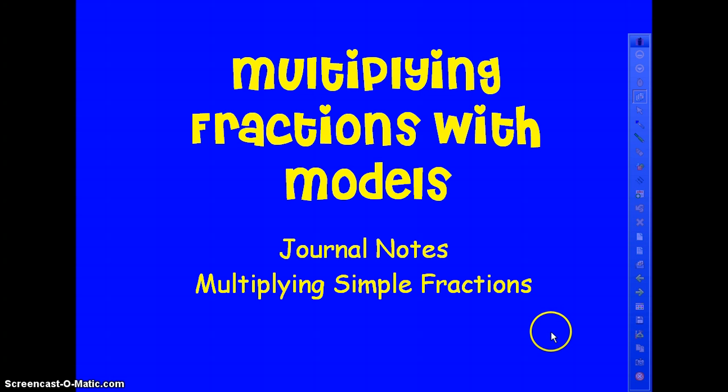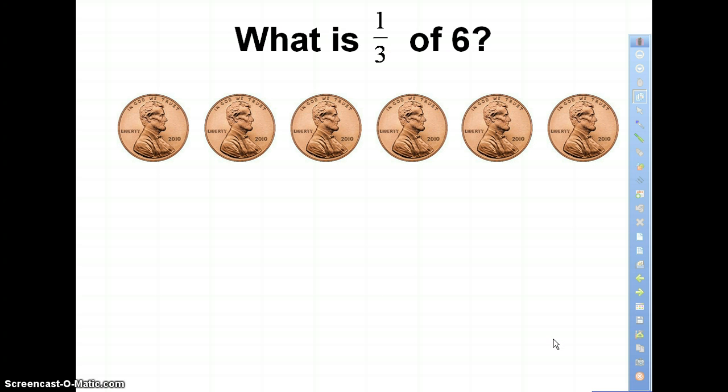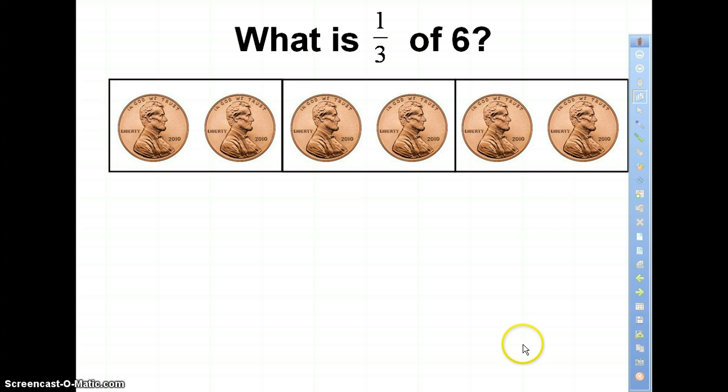All right, so let's get started. First problem number one: I want to know what is one-third of six. I've got six pennies here. If I divide them up into three equal groups, I want to know how many pennies are in each group. So let's divide them up into three equal groups. It's easy to see here there's two pennies in each group.